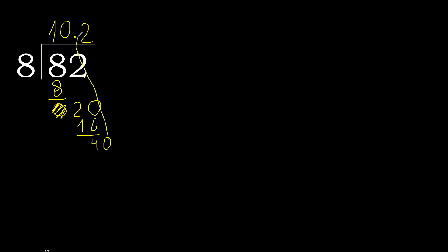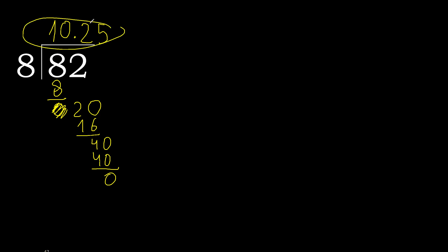Complete. The decimal point is here. Bring down 0 to make 40. 8 multiplied by 5 is 40. Subtract — 0. Therefore finished: 82 divided by 8 equals the answer shown here.